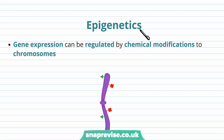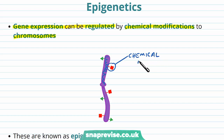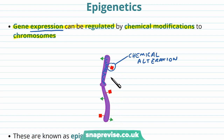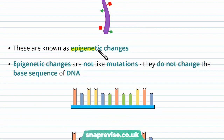We've mentioned in other videos how gene expression can be regulated by various factors, but they can also be regulated by chemical modifications to the chromosomes. The chromosomes are the way that we package DNA inside the nucleus, and they're massive regions of DNA all coiled up. We can make these chemical changes to the chromosomes to alter whether a gene is expressed or not. By expression we mean whether a gene is turned on, i.e. the product is made, or whether it's turned off and the product is not made. These chemicals can help control which genes are turned on and off at a certain time, and these kind of changes are known as epigenetic changes.